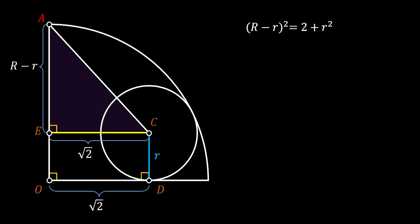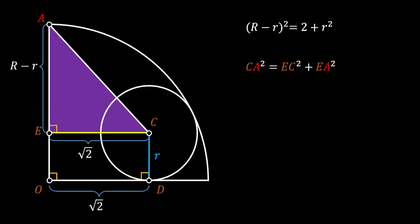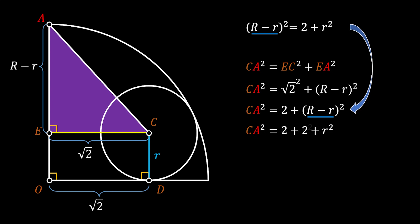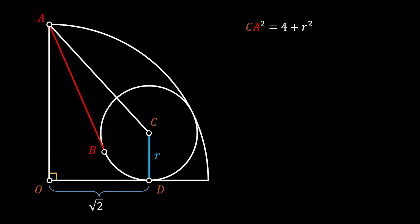Now let's look at right triangle AEC and apply the Pythagorean theorem: hypotenuse CA squared equals leg EC squared plus leg EA squared. Substituting our values we get CA² = (√2)² + (R - r)². We can notice that the squared difference (R - r)² also appears in our first equation, so substituting that value in, we can simplify to get that CA squared equals 4 plus r squared.